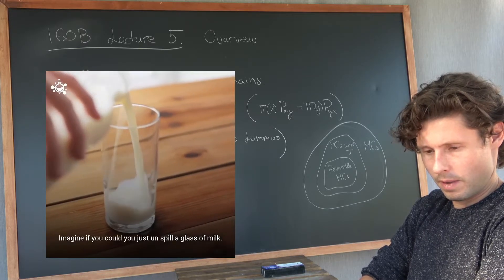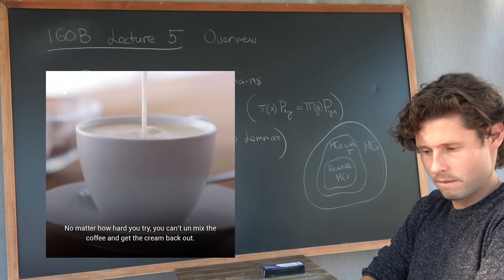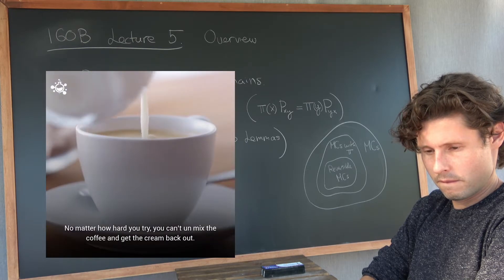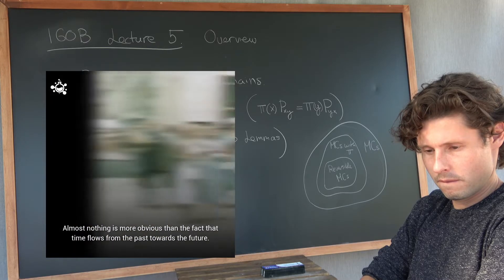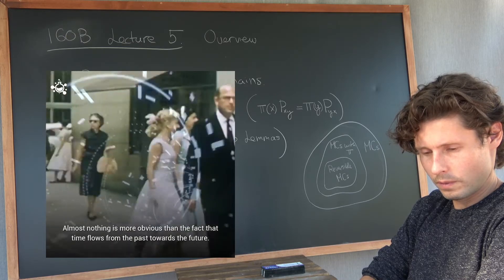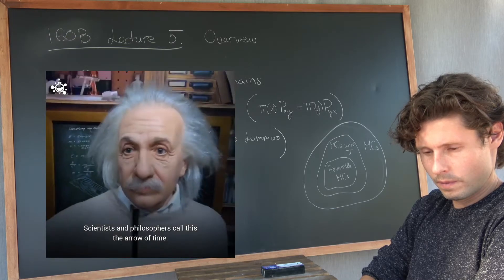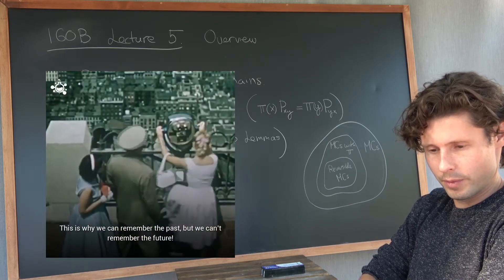Imagine if you could just unspill a glass of milk or unbreak an egg. No matter how hard you try, you can't unmix the coffee and get the cream back out. Almost nothing is more obvious than the fact that time flows from the past towards the future. Scientists and philosophers... Okay, so we see Einstein there and the arrow of time and so on.